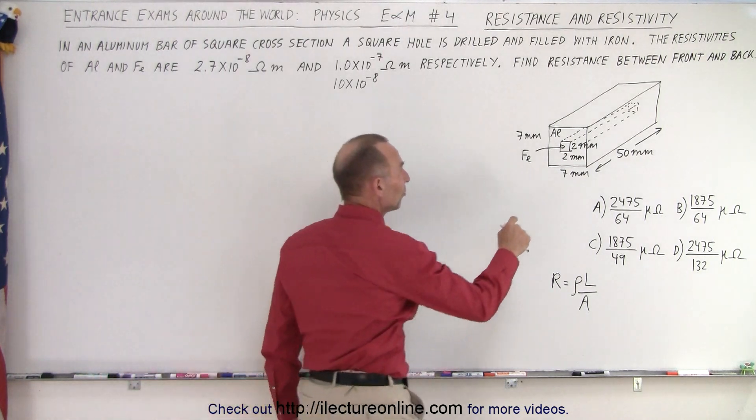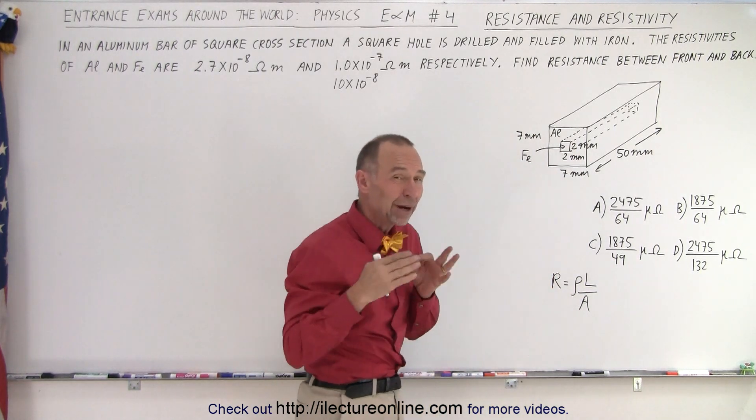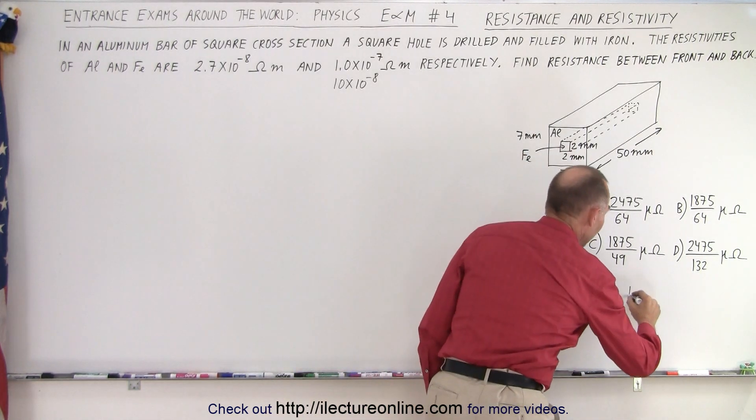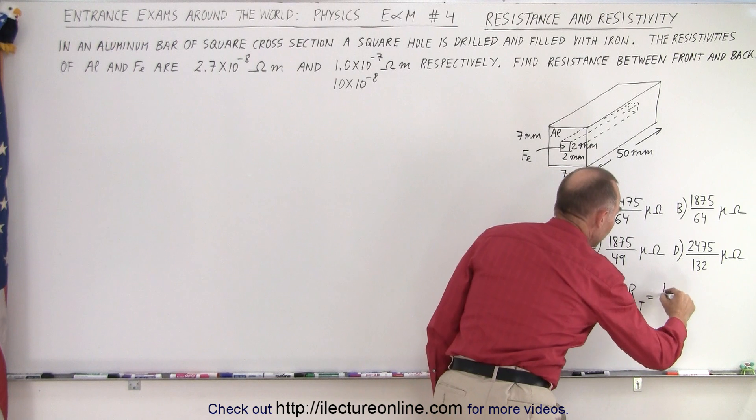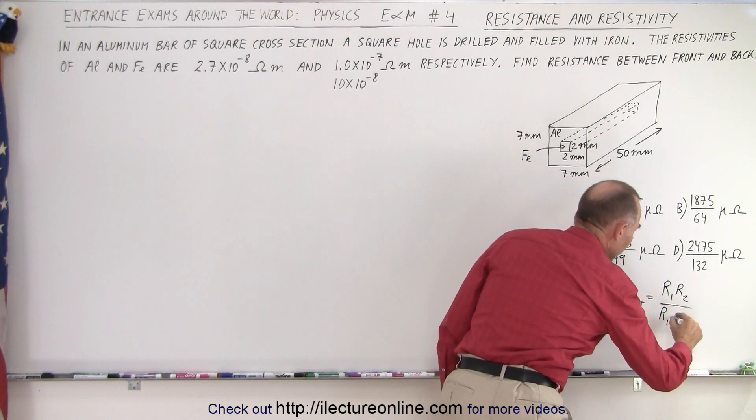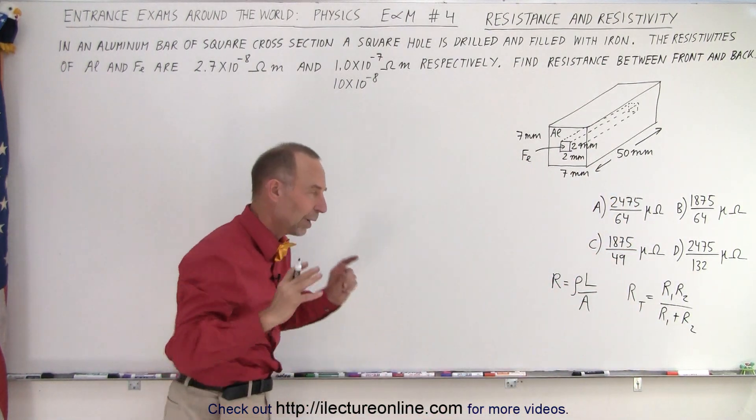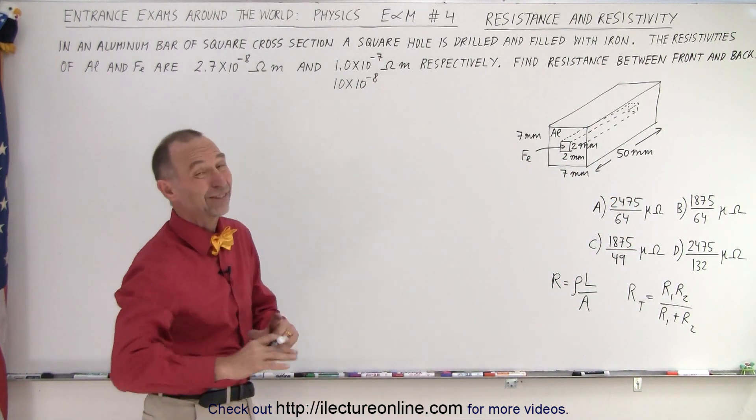Secondly, once we know the resistance of the aluminum and the resistance of the iron, you realize that they're in parallel. So that means that the resistance total is going to be equal to the product over the sum, so it's going to be the product of the two divided by the sum of the two.